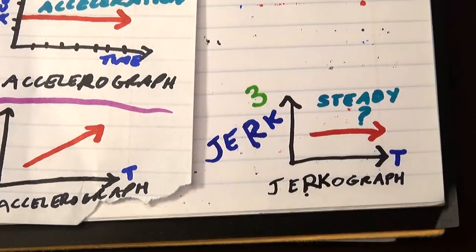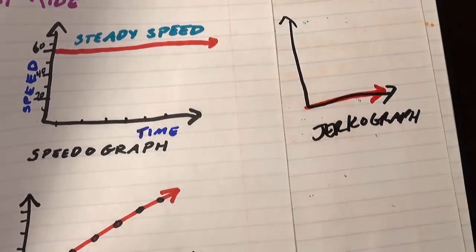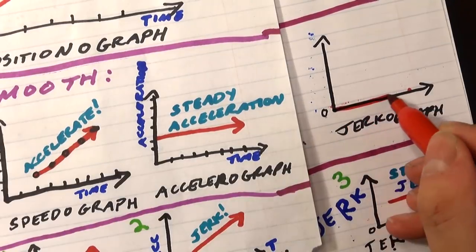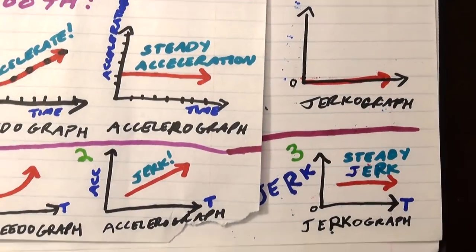And that's really how you measure a smooth ride. If you're at a steady speed, there's no jerk. And if you're in the middle of a steady acceleration, there's no jerk. But when you change the acceleration, there is jerk.